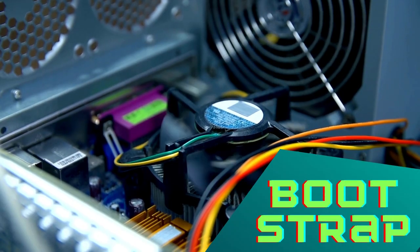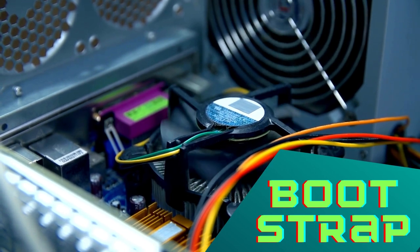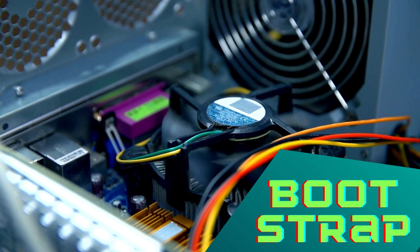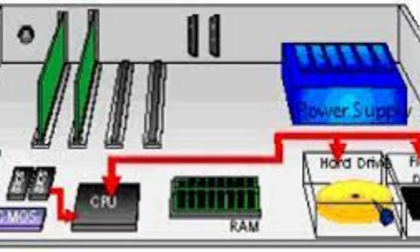Bootstrap Process. The bootstrap process is like the starting point for an operating system. It's the first thing that happens when you turn on your computer or restart it. During the bootstrap process, the computer's hardware and firmware perform a series of actions to load the operating system into memory and kickstart its execution. This includes initializing important components like the processor, memory, and device controllers. Once the operating system kernel is loaded into memory, it takes over the management of the system.